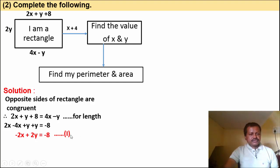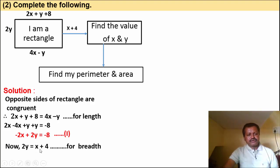This is equation number 1. Now take the second pair of opposite sides: 2y and x plus 4 are also equal. So we write 2y is equal to x plus 4. Simplifying: minus x plus 2y is equal to 4.